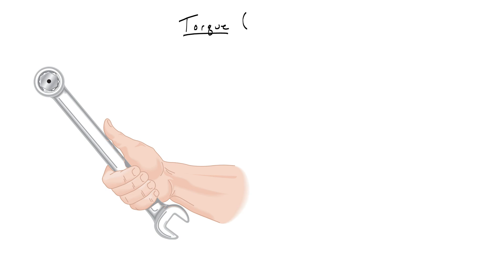In this video we're going to talk about torque, which in physics we use the Greek letter tau to represent. And because it has a magnitude and direction, we put an arrow above it to represent it as a vector.